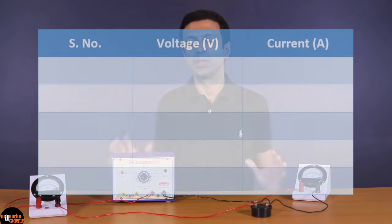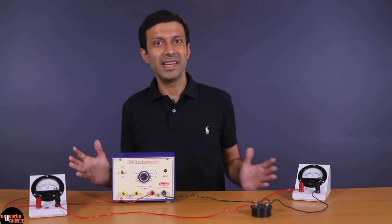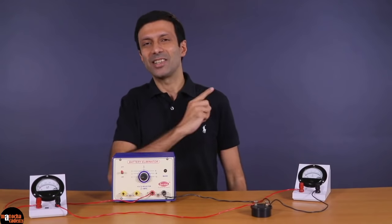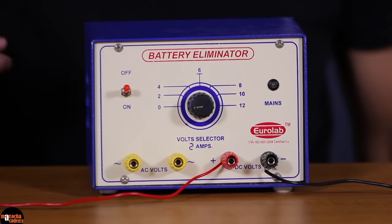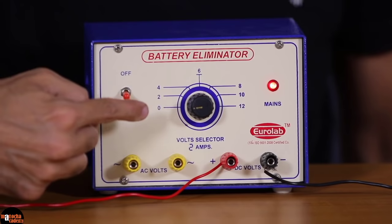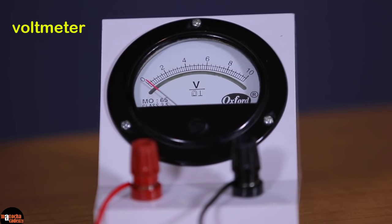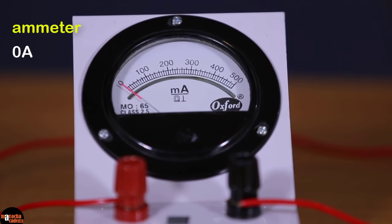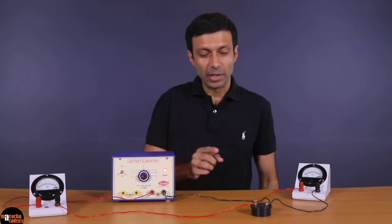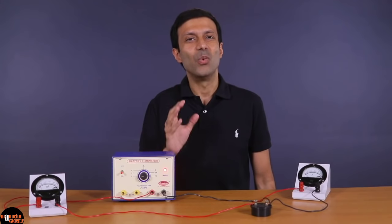For our experiment, we are going to change the potential difference across the wire by turning the knob, and we will make a table of observations — recording the values of potential difference across the wire and the corresponding current. Now I'm going to switch on the voltage supply. The knob is at 0 volts, so no voltage is being supplied. As you can see, the voltmeter shows 0 volts and the ammeter also reads 0 ampere.